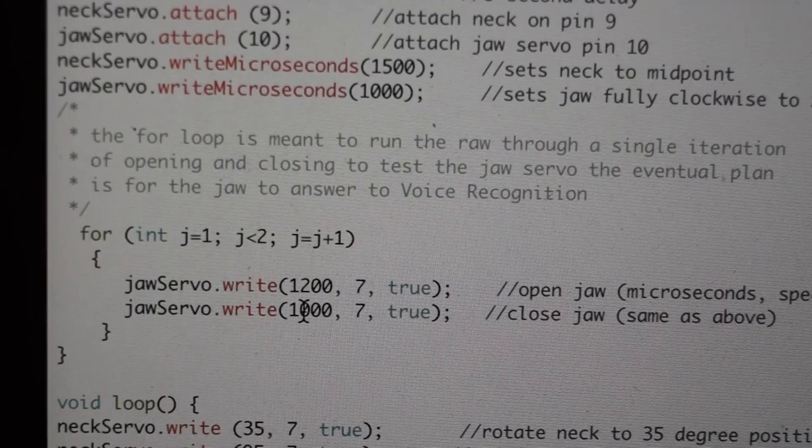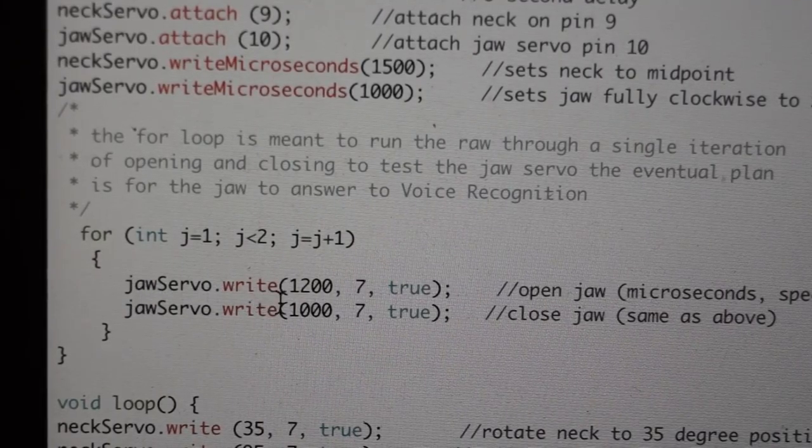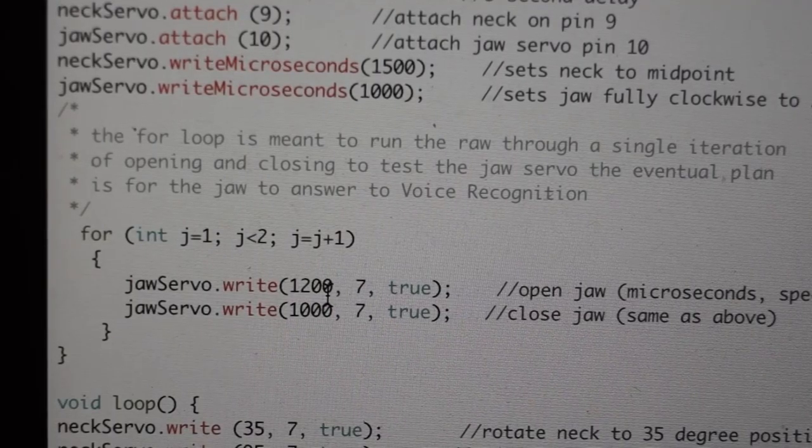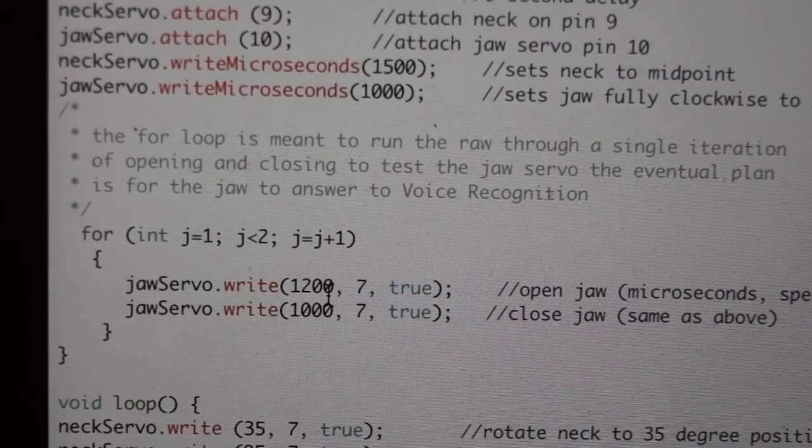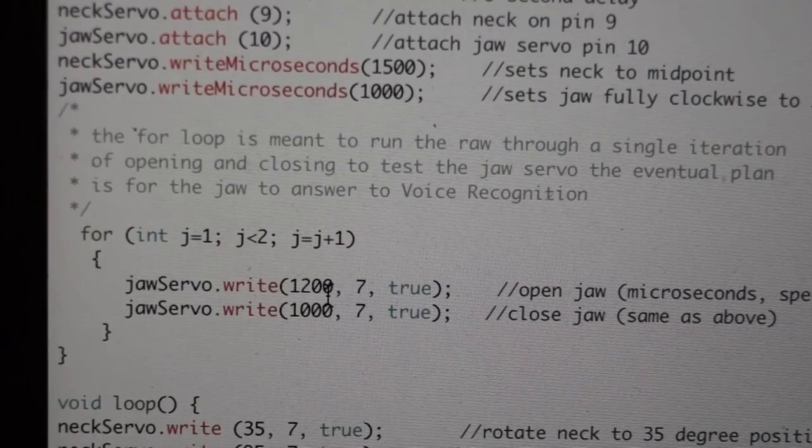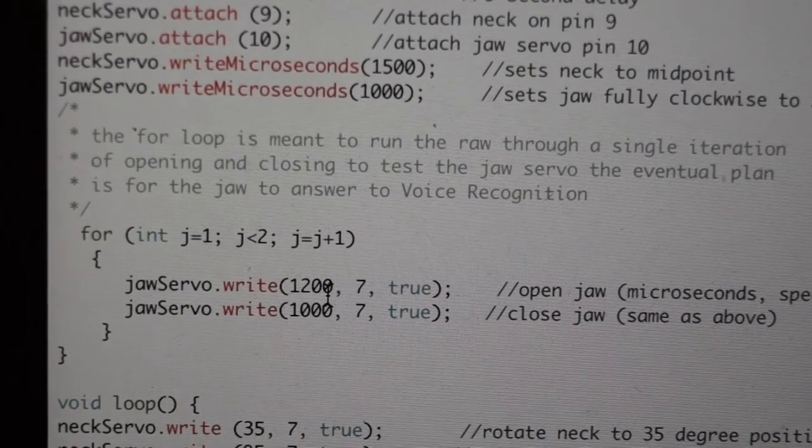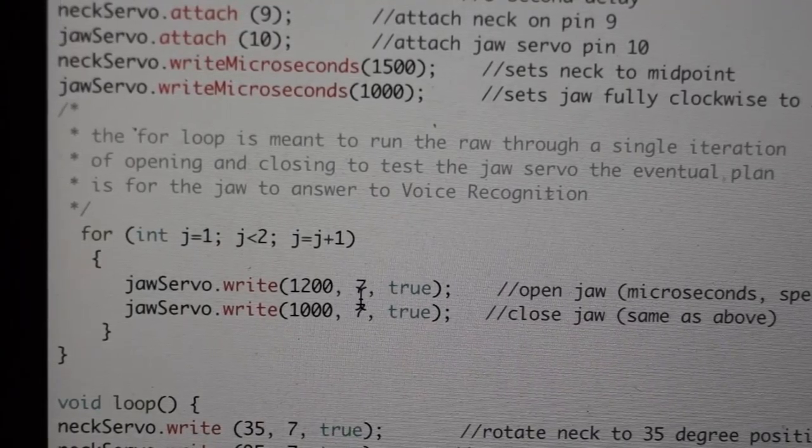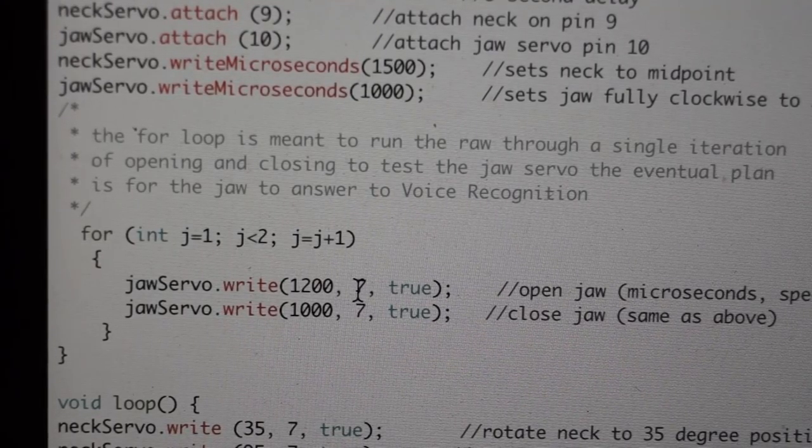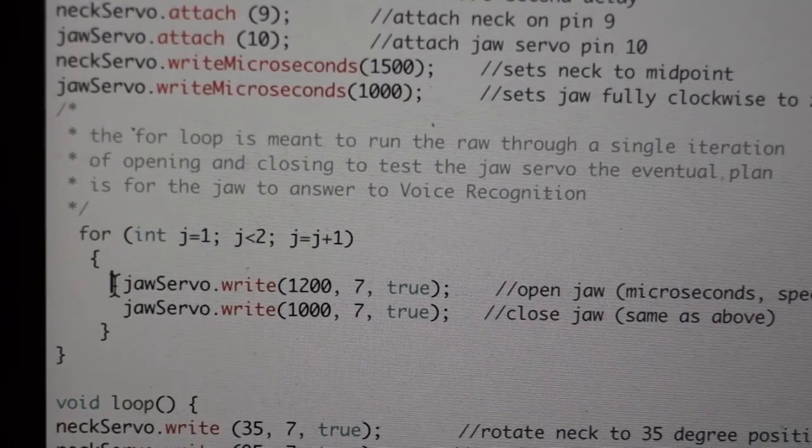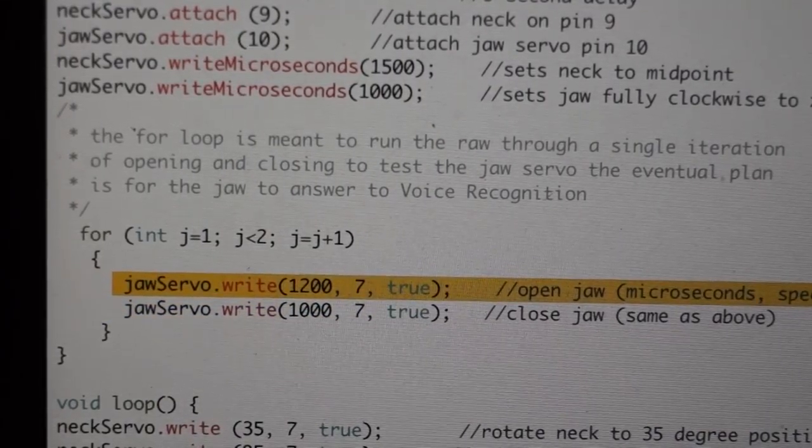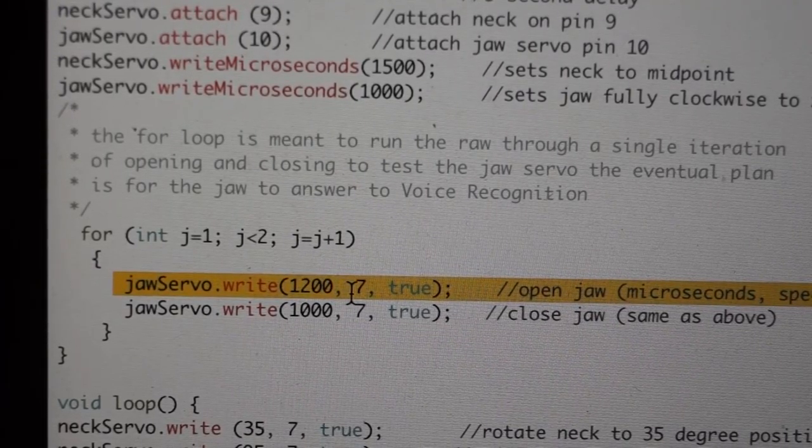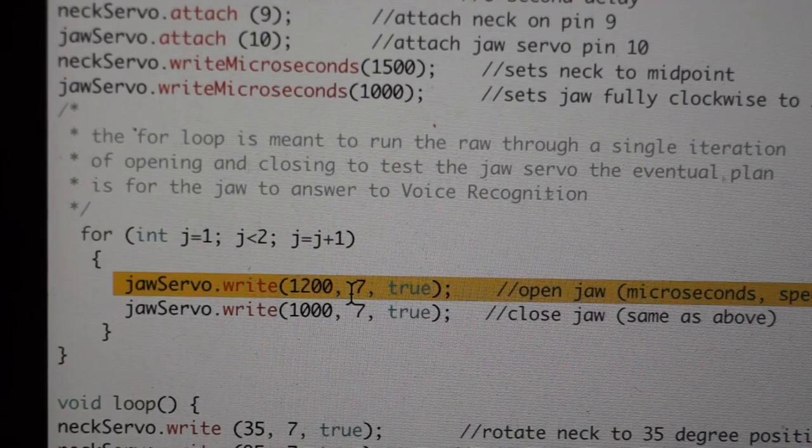And then you can see that I've got a comment here which explains this for loop that I've created. And the for loop is really just to test the jaw at this stage. So the way it's written out is that J is the integer that we're using to designate the jaw servo equals 1. As long as it is less than 2 and it iterates itself by 1, then this loop is going to run. What that means is that the jaw is going to open to 1200 microseconds, which if you look at it is probably about 2, 3 degrees tops. I could do the math and get it exact for you, but it's just a little bit and it looks natural.